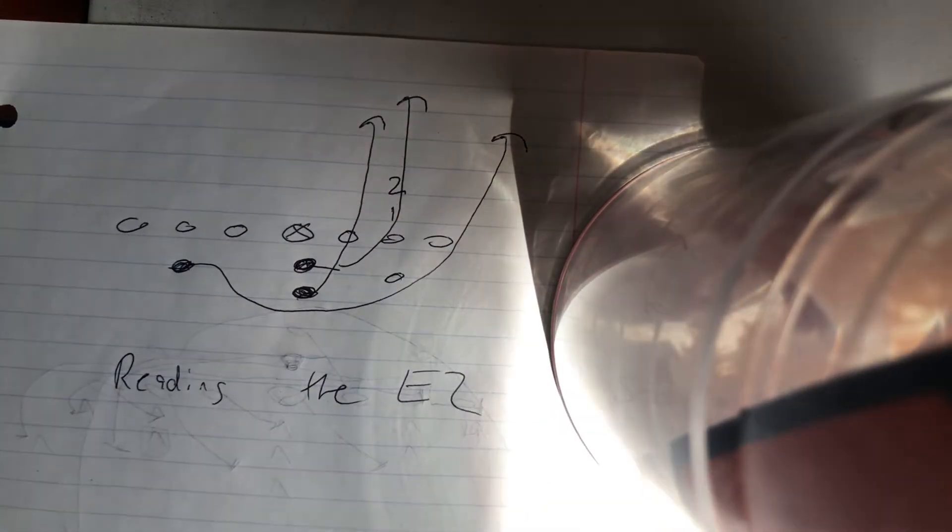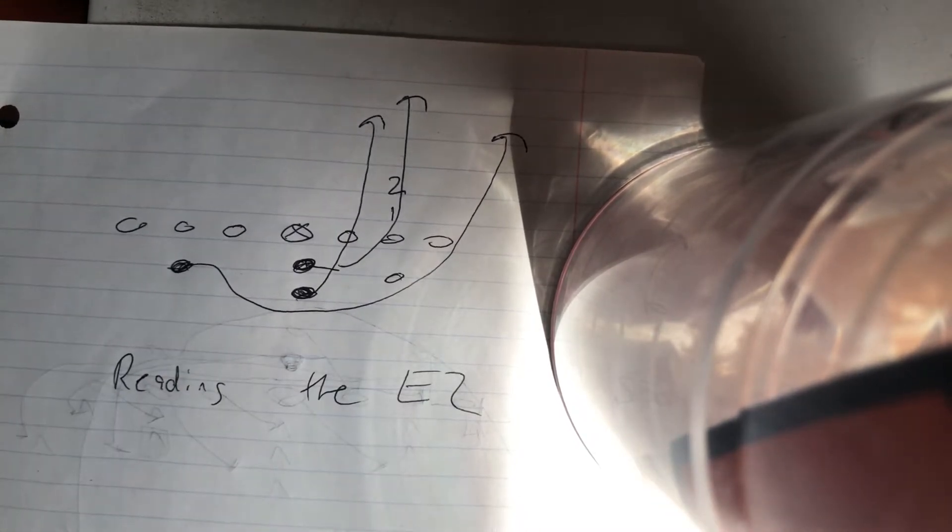All right, here we go. How a quarterback reads the easy stunt. Easy stunt is when one and two are stacked. So there's nobody next to number one, so you've got to read the person behind him.